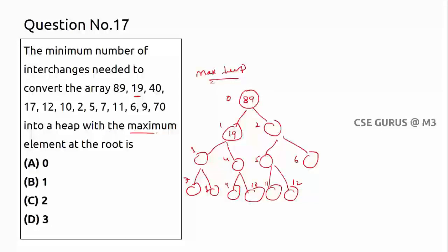Insert 40: 89 is greater, no interchange. Insert 17: check against its parent, it is less, fine. Insert 12: less than parent 19, fine. Insert 2: less than parent, fine. Insert 10: less than parent, fine. Insert 2: less than parent. Insert 5: less than parent. Insert 7: less than parent, fine.